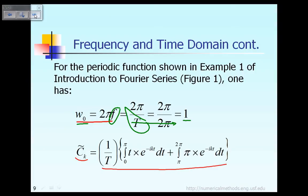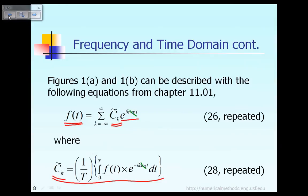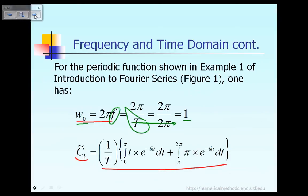The last equation shown here comes from equation 28. The only thing we need to do is break up the integral from 0 to T into two integrals: the first integral going from 0 to π, and the second integral going from π to 2π. Corresponding to the first integral, the function is defined as t, and corresponding to the second integral, the function is defined as π.